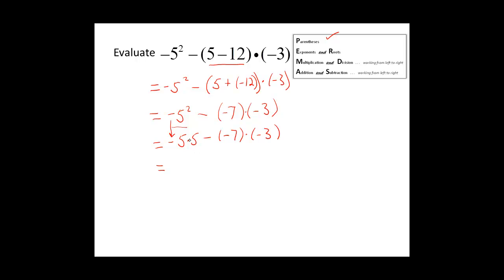So now we can compute 5 times 5, which is equal to 25. And we will bring the negative in front. So we have now completed our exponents and roots step.